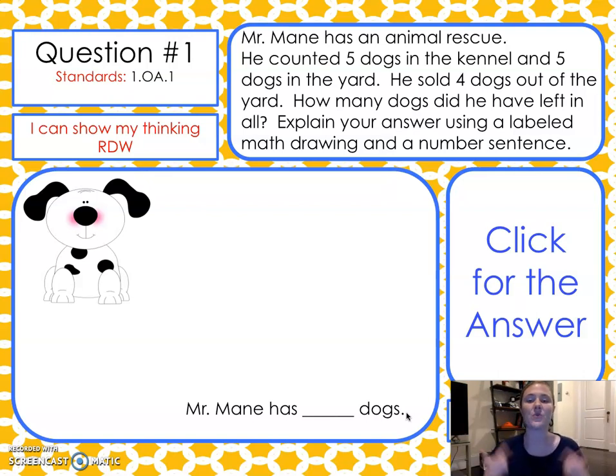We read. Good mathematicians reread and think about the important information. Mr. Main has an animal rescue. He counted five dogs in the kennel and five in the yard. Draw that now. Five in the kennel and five in the yard, and you can label kennel yard. He sold four dogs out of the yard. Cross out the four in the picture that has yard. How many dogs did he have left in all? Explain your answer using a labeled math drawing and a number sentence. We read and then we re-read. You started your drawing. Then you're going to write a number sentence and a statement. You do need more time to solve this. Please press pause now.